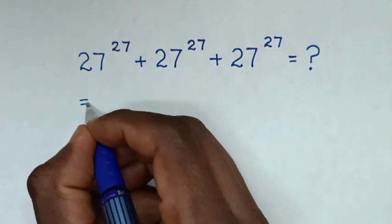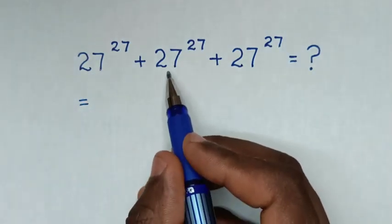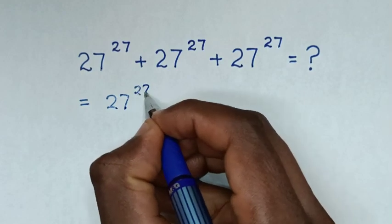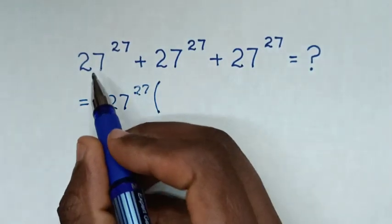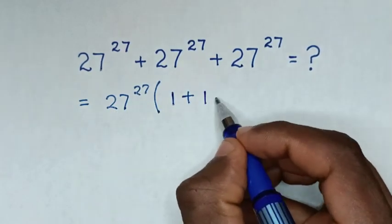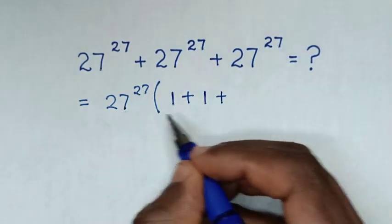So, it will be equal to... In here 27 to the power of 27 is common. So take 27 to the power of 27 out of the bracket, then this divided by this is 1 plus this divided by this is 1 plus this divided by this is 1.